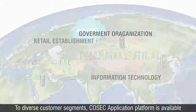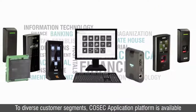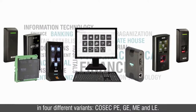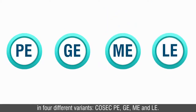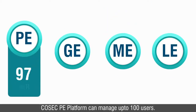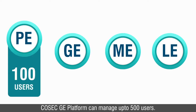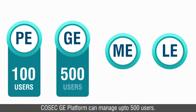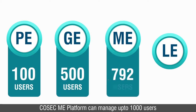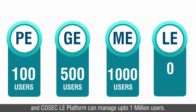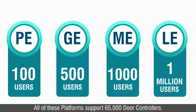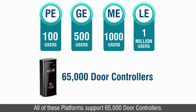To diverse customer segments, Cosec application platform is available in four different variants: Cosec PE, GE, ME and LE. Cosec PE platform can manage up to 100 users. Cosec GE platform can manage up to 500 users. Cosec ME platform can manage up to 1,000 users and Cosec LE platform can manage up to one million users. All of these platforms support 65,000 door controllers.